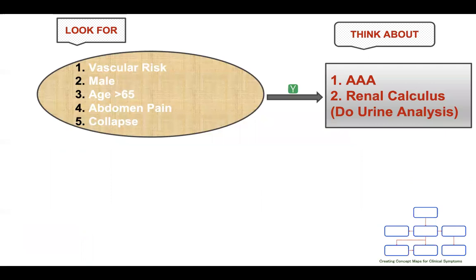Here is how we approach. Look for any vascular cause. Look for the gender of the patient — male or female — and whether the patient is aged more than 65. Has the patient got abdominal pain or has the patient collapsed? If the answer to these questions is yes, then think about abdominal aortic aneurysm, or AAA. Most importantly, we must do an abdominal examination to exclude AAA.